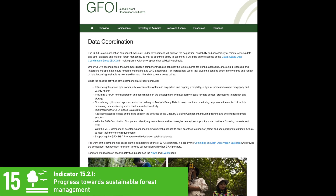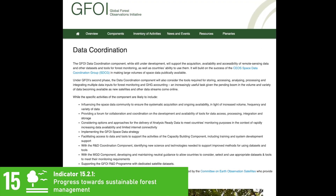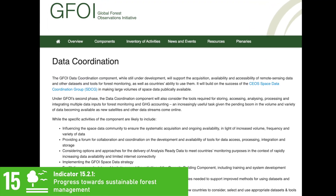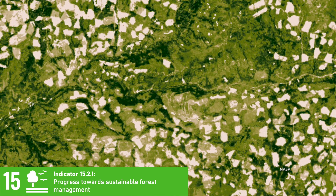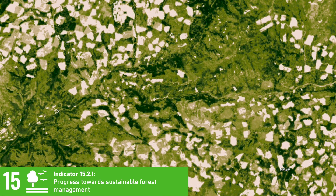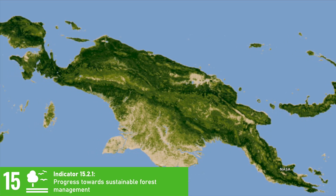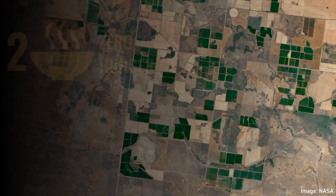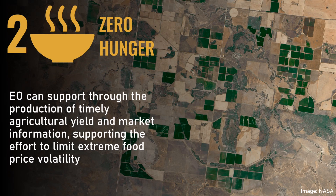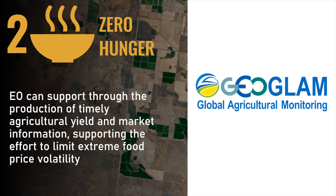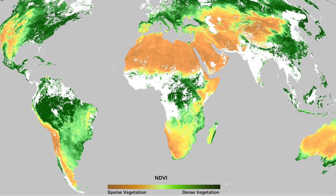Beyond the SDG team, SEOS also works closely with the Global Forest Observations Initiative, providing support for the indicator monitoring sustainable forest management, with the aim to provide countries with wall-to-wall national coverage of satellite data. SEOS agencies have committed to providing global annual coverage of the world's forests to ensure countries have the minimum data necessary to participate in frameworks focused on sustaining forest cover. SDG 2 calls for zero hunger, and Earth observations can help achieve this through the production of timely agricultural yield and market information, supporting the effort to limit extreme food price volatility. While the SDG team is not directly involved with SDG 2, SEOS provides support to GeoGlam — the Group on Earth Observation's Global Agricultural Monitoring Initiative — through the LSIVC GeoGlam subgroup, and is exploring ways to support SDG 2.